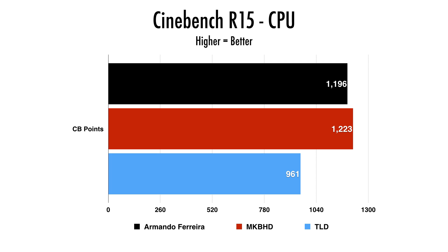Jumping to Cinebench R15, I was right in the middle — the high score was MKBHD at 1,223, I wasn't far behind at 1,196, and TLD scored 961. In terms of CPU computation performance it was actually quite close. So when you're looking to buy a 6-core or 8-core, the processor performance difference is not that much — you have to ask yourself if the price premium is really worth it.